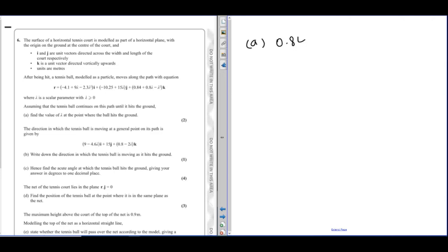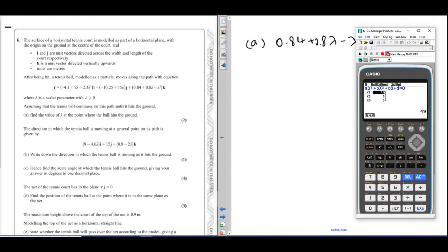So we'll just set that k component equal to 0. This is a quadratic in lambda that we can solve. So get your calculator. Solve the quadratic, so we've got minus lambda squared, 0.8 lambda, 0.84, and that gives us two values for lambda, 1.4 and minus 0.6.